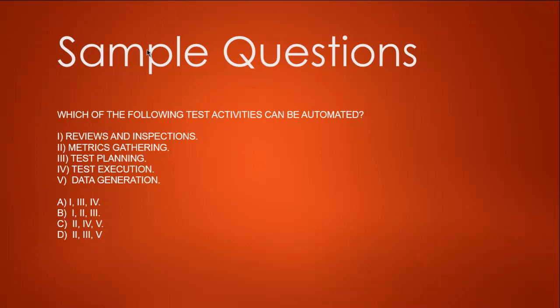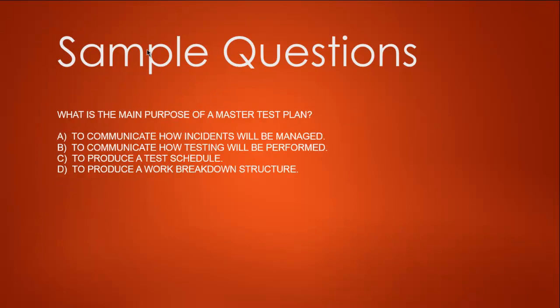Option B is also not true because we already ruled out reviews and inspections. So we have a choice between C and D. Option C says two, four, five - matrix gathering, test execution, and data generation. Option D says two, three, and four. Test planning being automated is not true, so option D is out. Option C - matrix gathering, test execution, and data generation can be automated - is the answer. The answer is C.